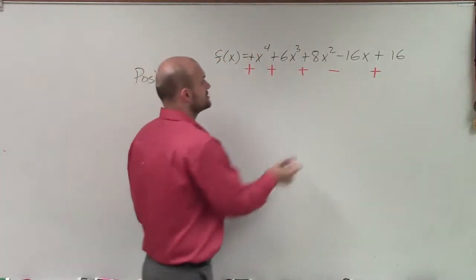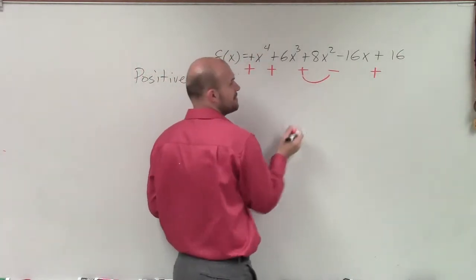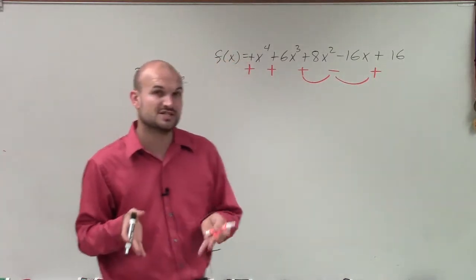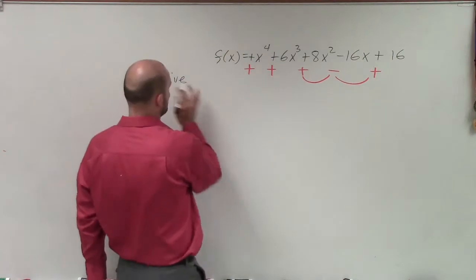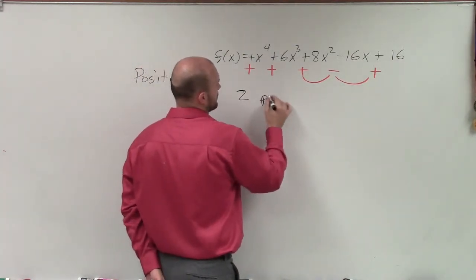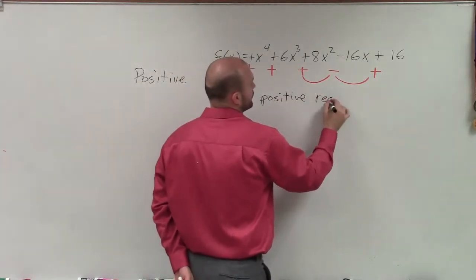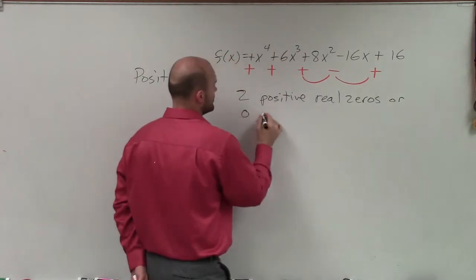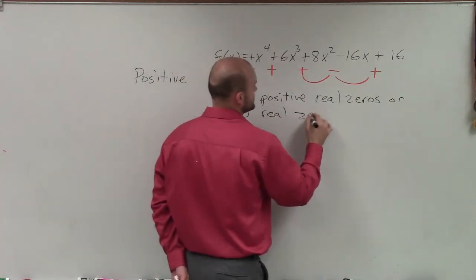What you can see is there's an alternation between positive and negative, and then negative to positive. Therefore, we change signs twice. For the number of positive real zeros, we have a possibility of two positive real zeros or zero real zeros.